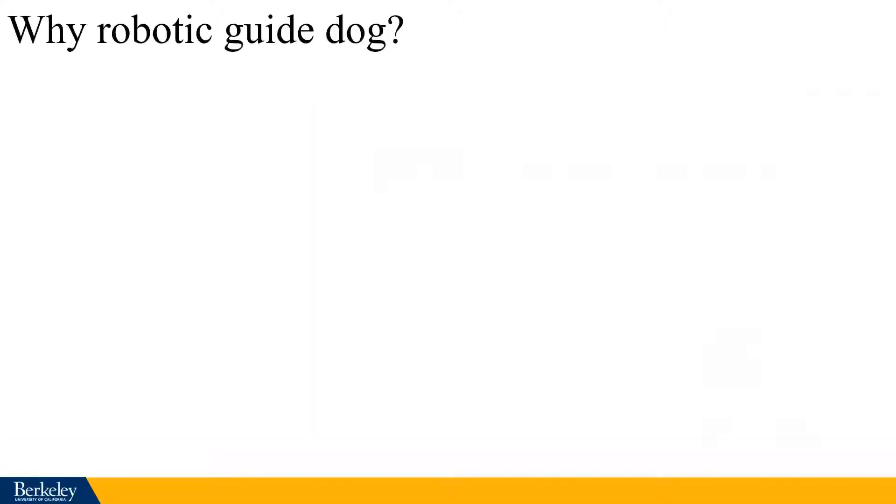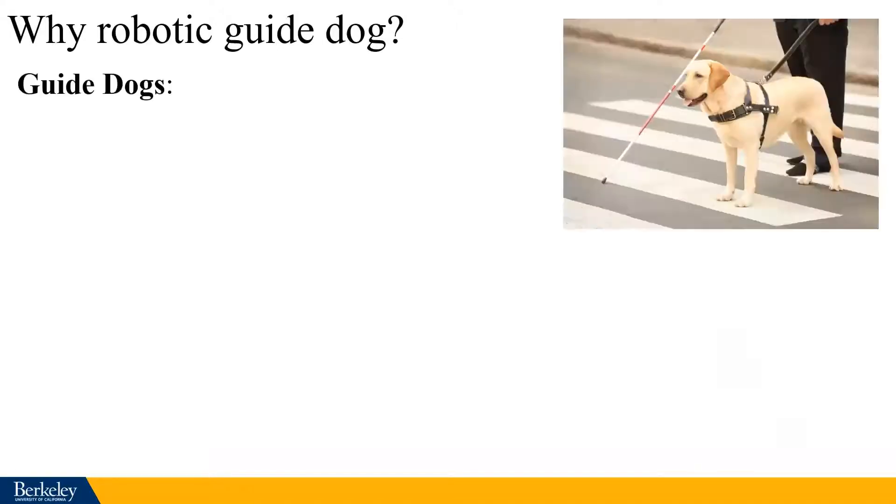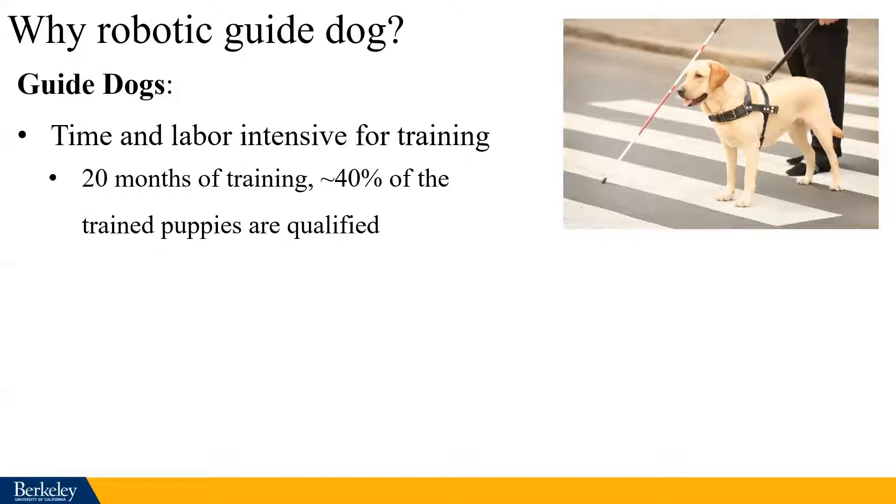So first of all, why do we need a robotic guide dog? Let me show you some numbers. Training guide dogs is both time and labor intensive, with the process not easily scalable. It takes about 20 months in the UK to train from a puppy to a guide dog. In addition, the skills from one dog cannot be transferred to another one, and only 40% of the trained puppies are qualified to serve as guide dogs.